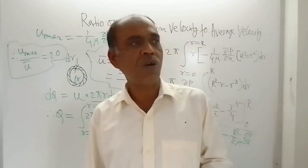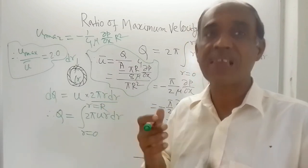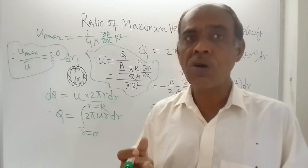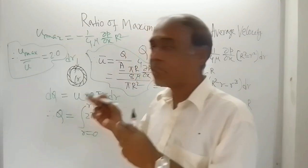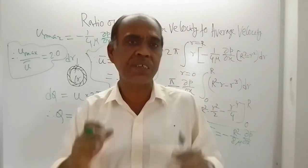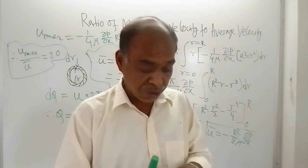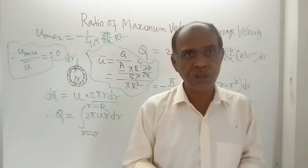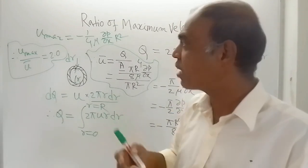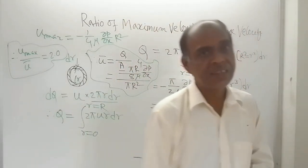This result — ratio of maximum to average velocity equals 2 — is for the flow of viscous fluid through a circular pipe, and of course the flow here is laminar. That means the Reynolds number is limited to a maximum value of 2000 for the flow to remain laminar. Only in that case will you get this ratio of 2. If the flow becomes turbulent, that means Reynolds number crosses 2000, a different approach must be used and you will not get 2.